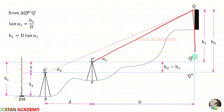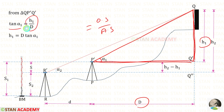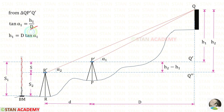Let us take the smaller triangle. Applying the tan theta formula — tan theta equals opposite side divided by adjacent side — the opposite side is H1 and the adjacent side is D. So tan alpha 1 equals H1 upon D, which gives us H1 equals D tan alpha 1.